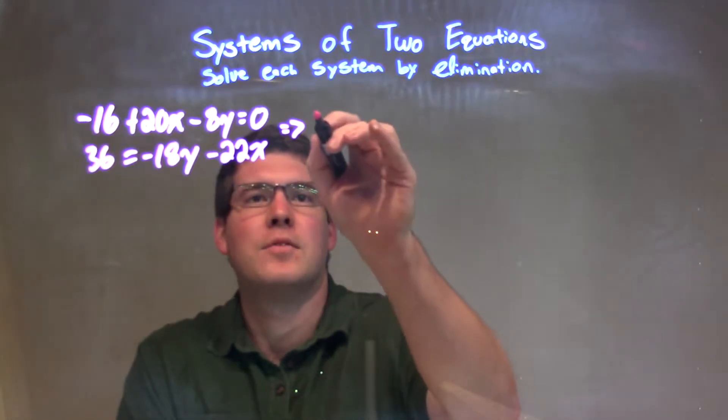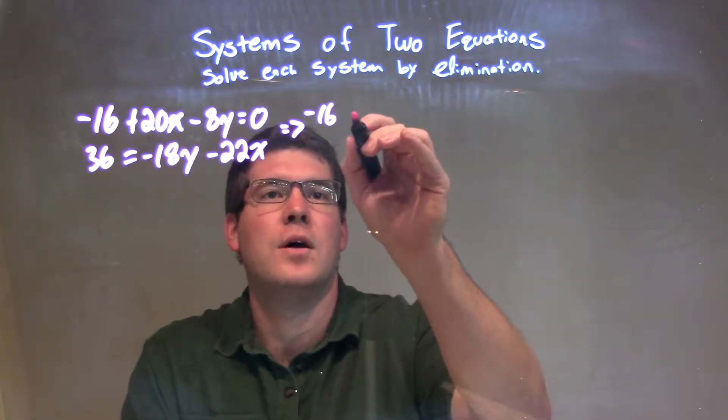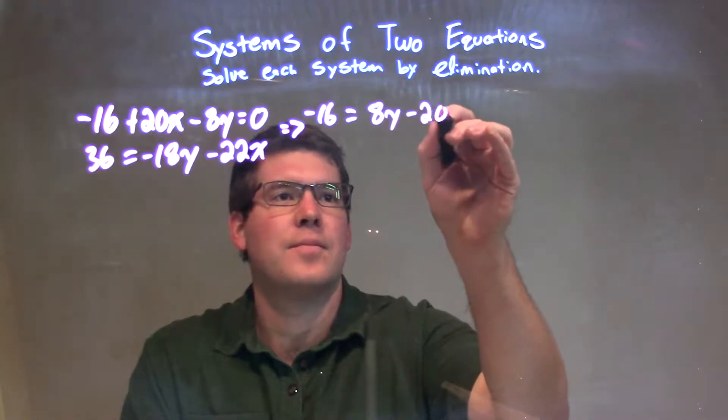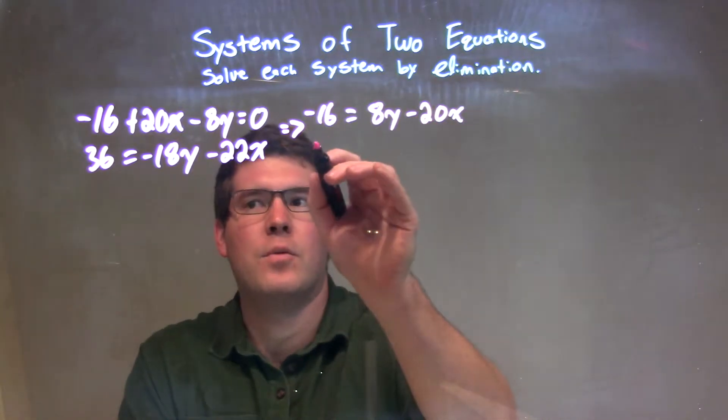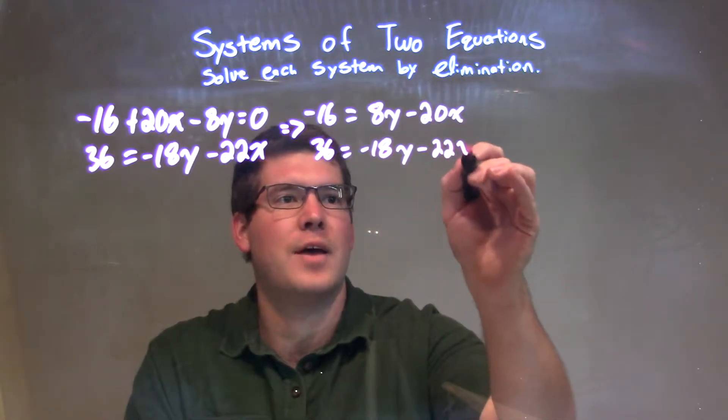So, the top I'm going to leave as negative 16, but then let's subtract the 20x and then add an 8y to both sides. So, we have equals a positive 8y minus 20x here, and then I'm going to bring over the bottom equation, 36 equals negative 18y minus 22x.